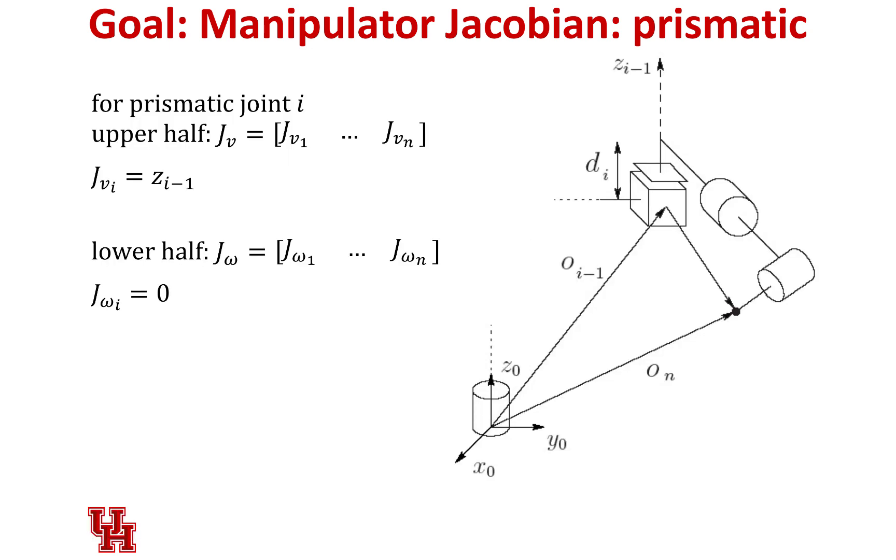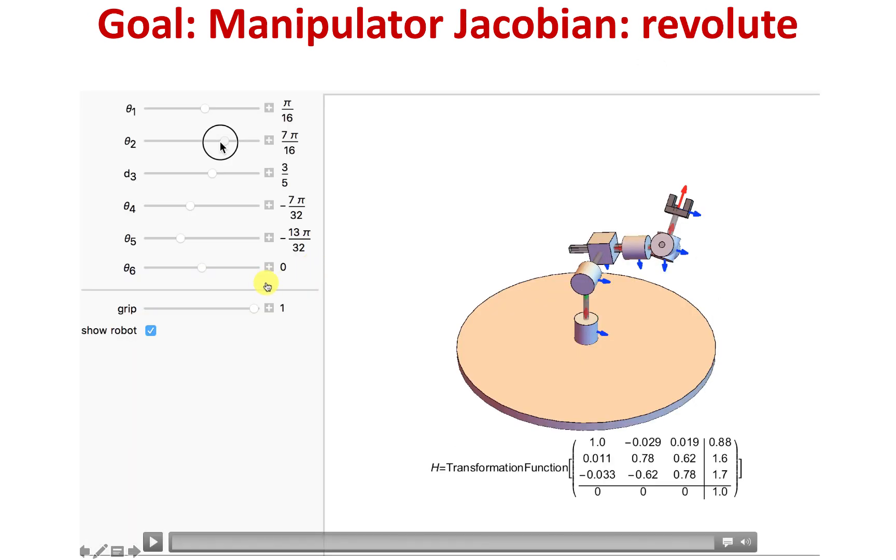And so you can see this for this manipulator Jacobian. If you've got the prismatic, we're just sliding this joint up and down. Everything beyond that is moving in that same axis, up and down. Just might be slid over, translated a little bit. So this one is easy to work with. The lower half, we've got nothing.